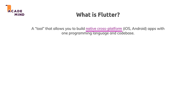You achieve this using one programming language — Dart — and one codebase. Without Flutter, you'd normally build an iOS app using Swift or Objective-C, and an Android app using Java or Kotlin, learning different languages and maintaining two separate projects. With Flutter, that's not the case: one programming language, one codebase, and you still get two apps.